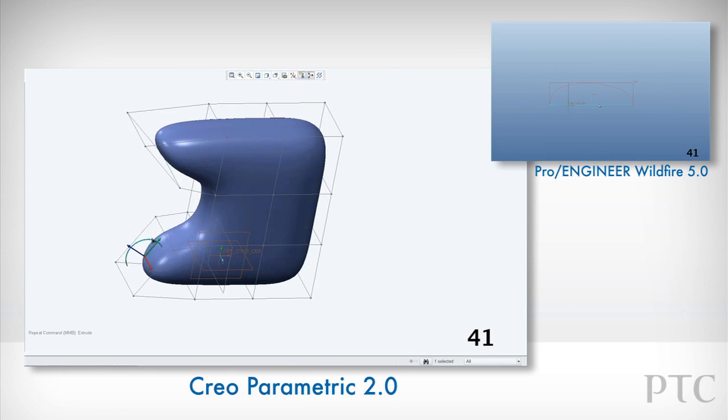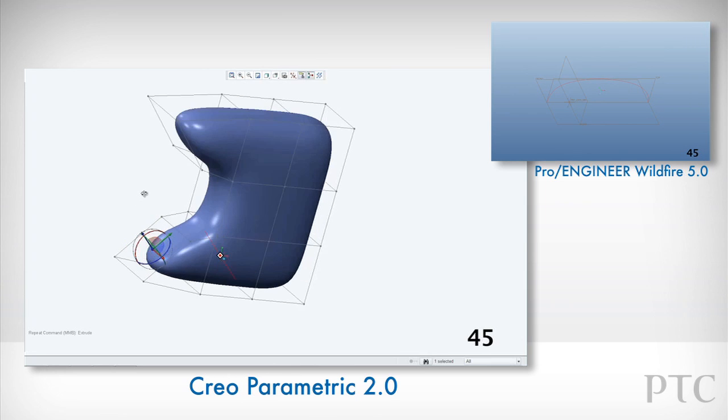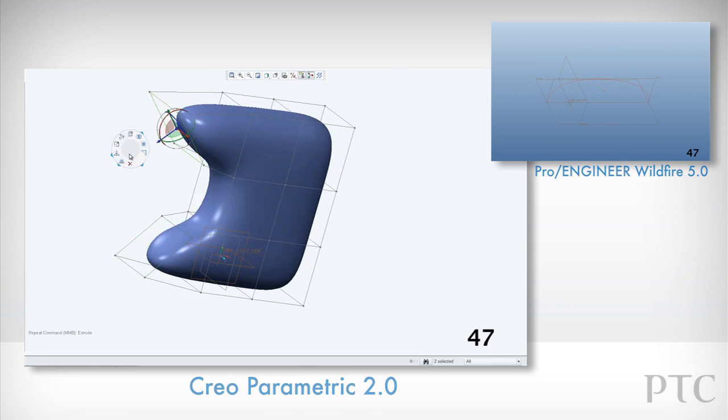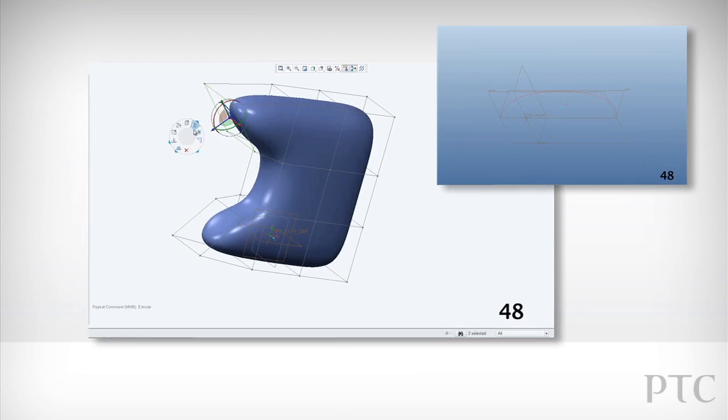Selecting two faces, we can use the connect command to build the handle for our watering can. And using the draggers, we can make the overall handle thinner as well.